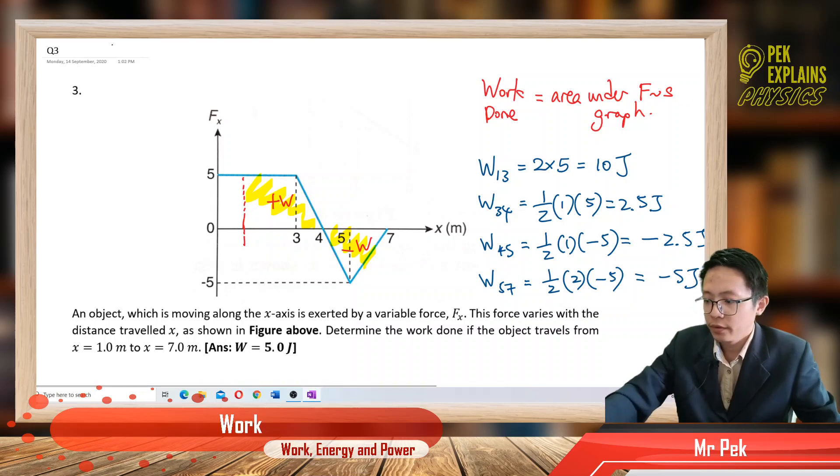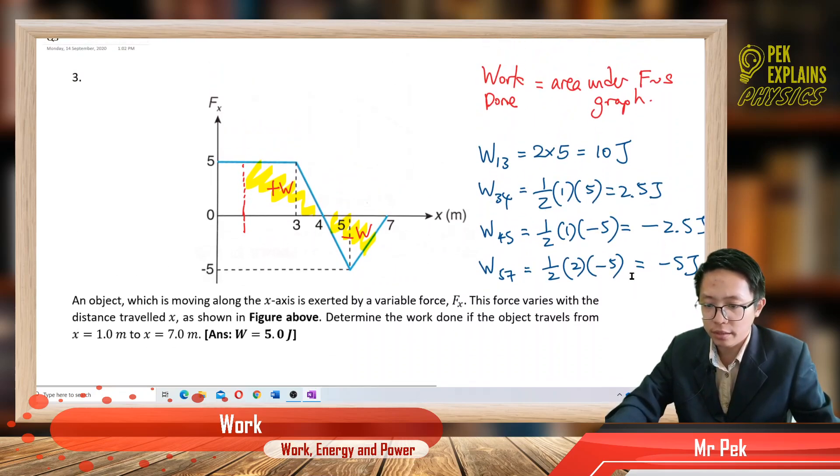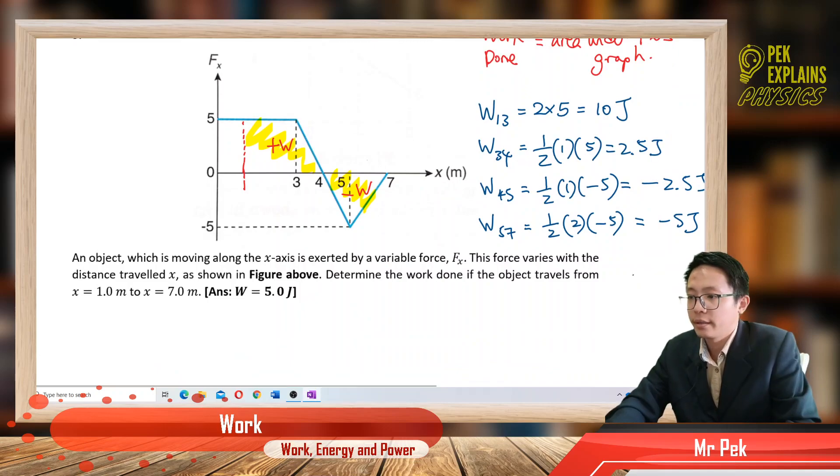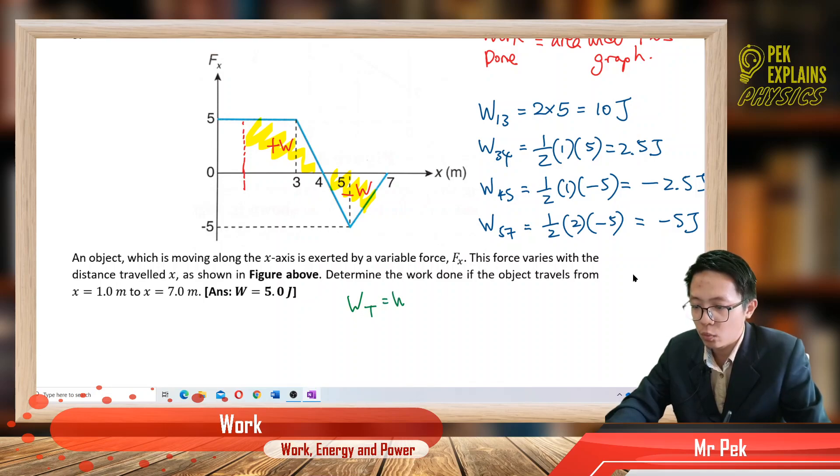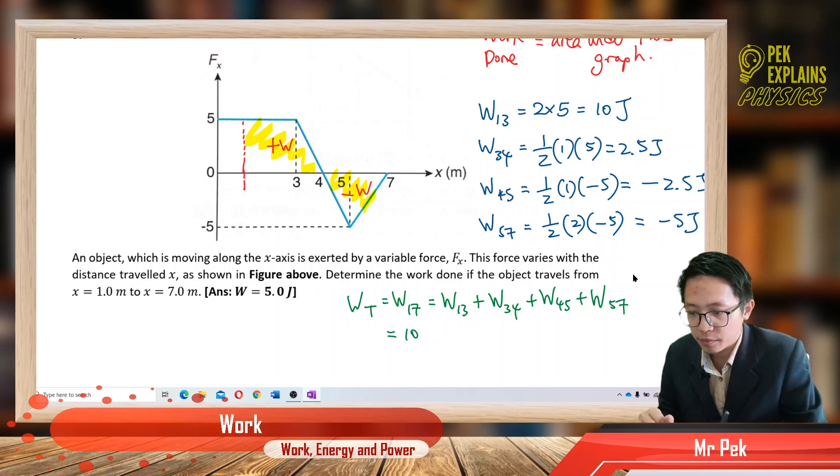So to find the total work done for 1 to 7, total work done for 1 to 7, we just total all this work done. Right, so let's do it. So the total work done for 1 to 7 meter, it is equal to work done 1 to 3 plus 3 to 4 plus 4 to 5 plus 5 to 7. So just total them. 2.5, negative 2.5, negative 5.